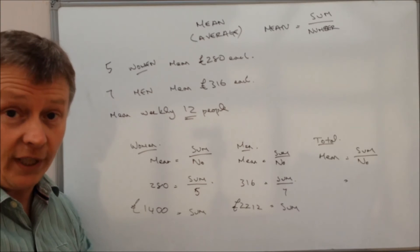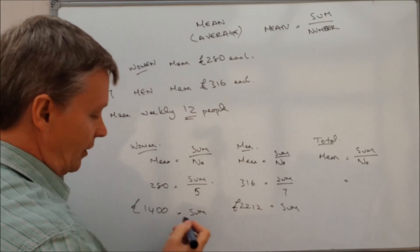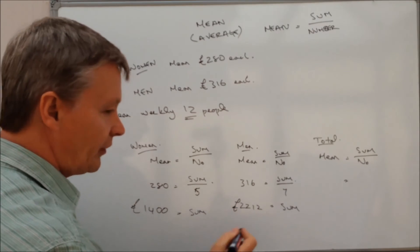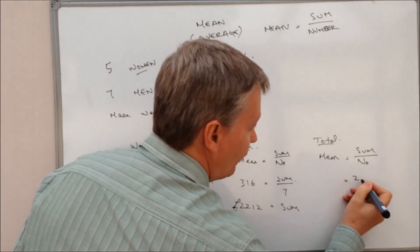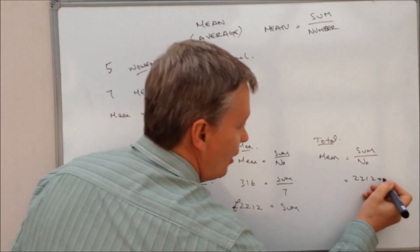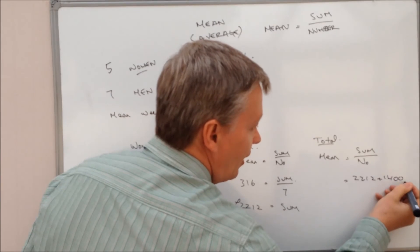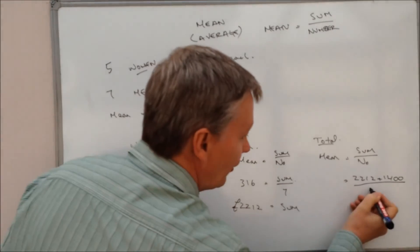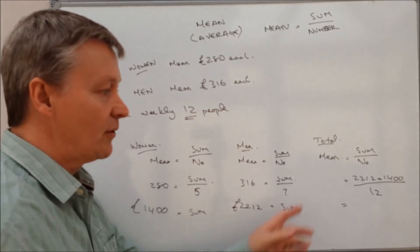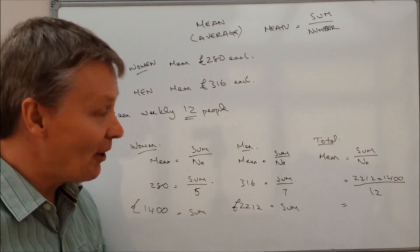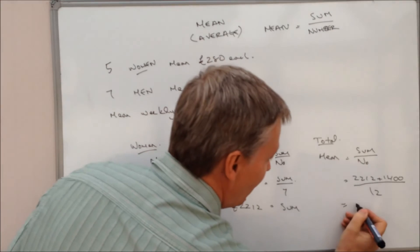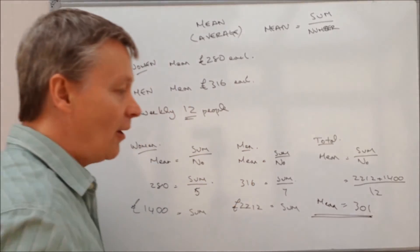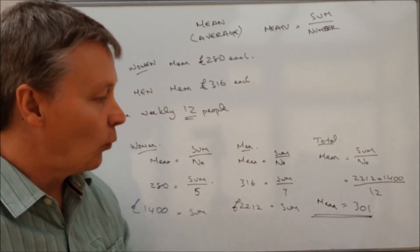Well, the mean we don't know because that's what we're calculating. The sum is going to be the sum of these two together. So it's the total wage bill. If I write it in here, 2212 plus 1400, and we're dividing that by the number of people altogether, which is going to be 12. So if I sum those two together, it's going to be 3612 divided by 12, and that's going to give me 301. So the mean average for the 12 people is going to be 301 pounds.